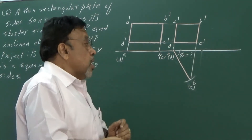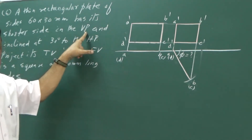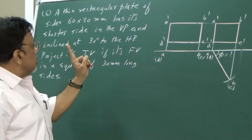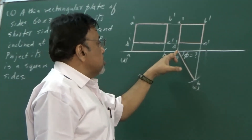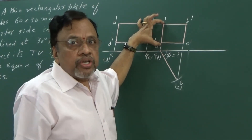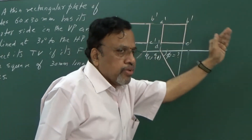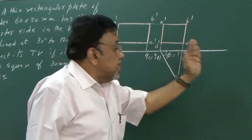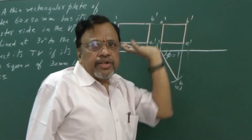Now we have satisfied surface inclination. What still needs to be satisfied? It is also given that the shorter side is not only in VP but also inclined at 30 degrees to HP. The inclination to HP will be seen in the front view. The side which is resting on VP is still perpendicular to HP in Stage 2. How should it be? It should be inclined at 30 degrees to HP. So I need to redraw this figure. Because inclination to HP is constant with reference to VP, the shape will not change. In this case, we are redrawing the front view.